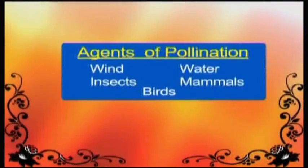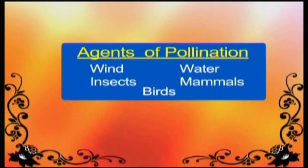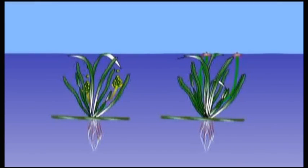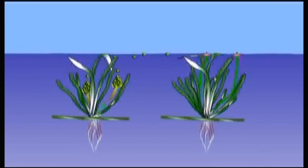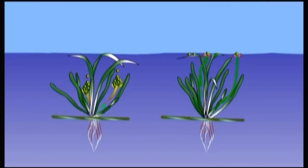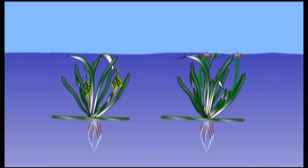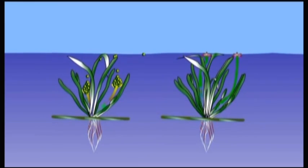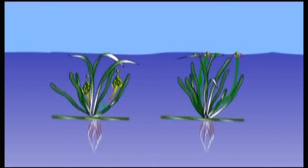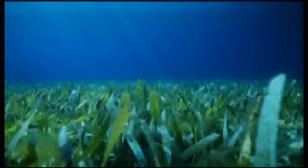Water. Pollination in aquatic plants is usually carried out by water. Water-pollinated flowers release their pollen grains into the water and are passively carried to other flowers by water currents. An example is seagrass.